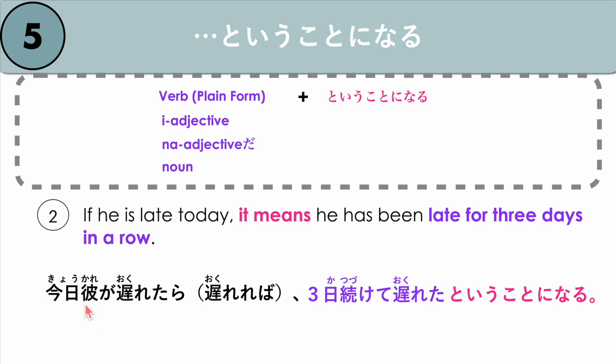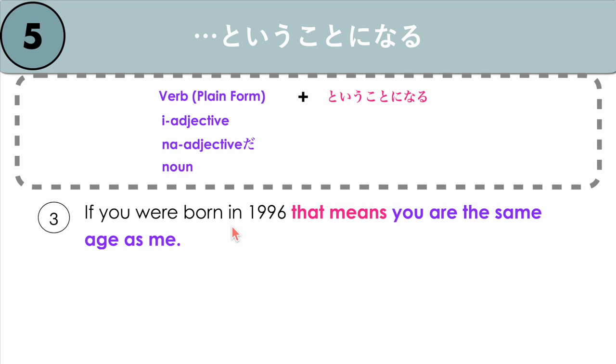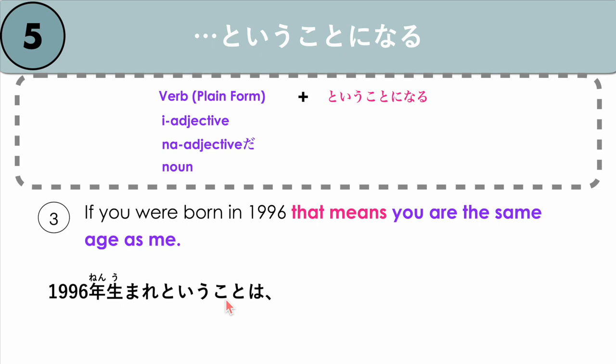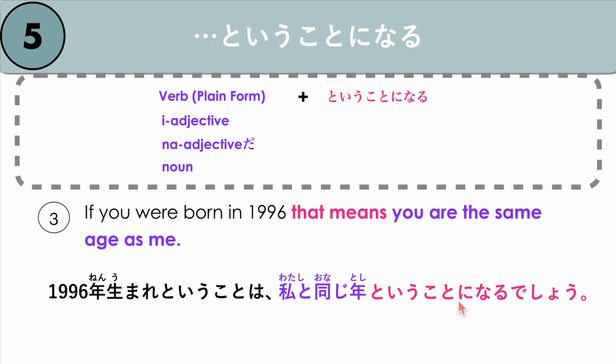Last example: if you were born in 1996, that means you are the same age as me. Sen kyuhyaku kyuujuu roku-nen umare to iu koto wa — if you were born in 1996 — you are the same age as me: watashi to onaji toshi to iu koto ni naru desho. Sen kyuhyaku kyuujuu roku-nen umare to iu koto wa, watashi to onaji toshi to iu koto ni naru desho.